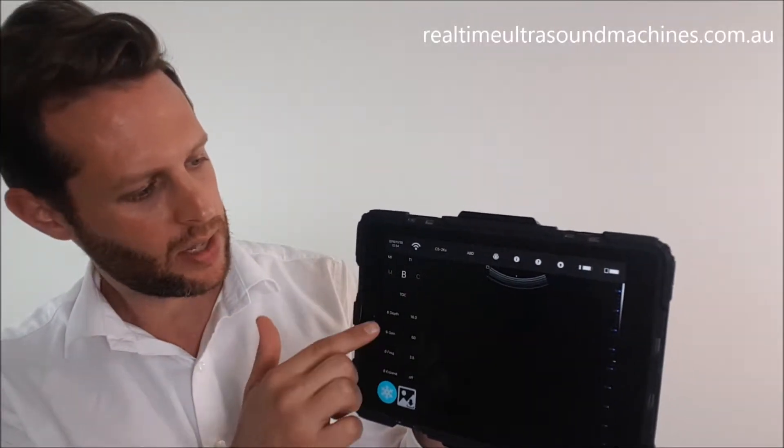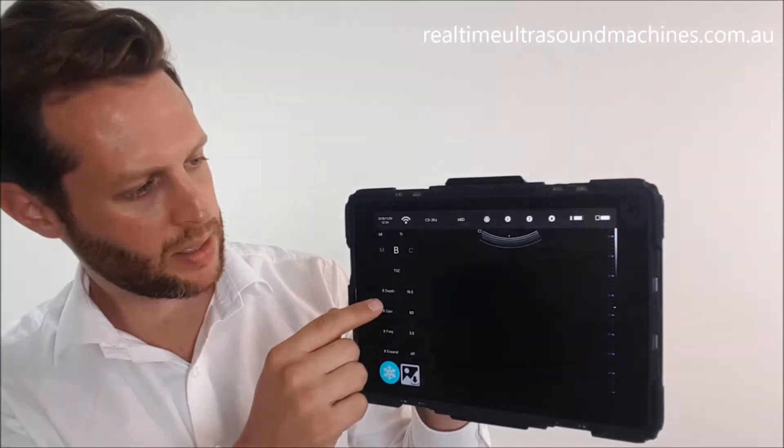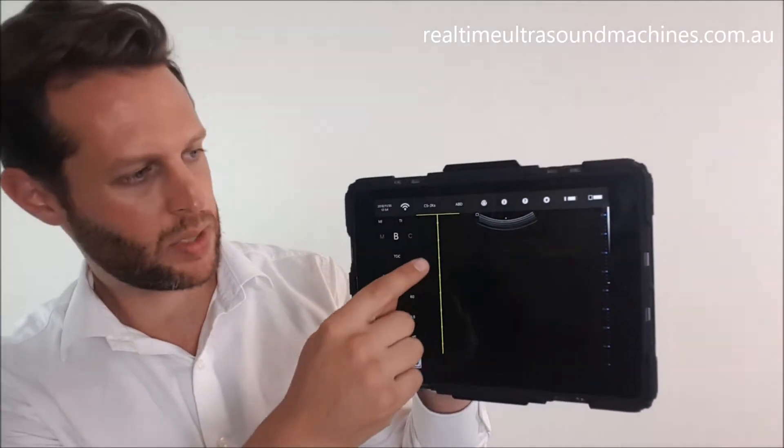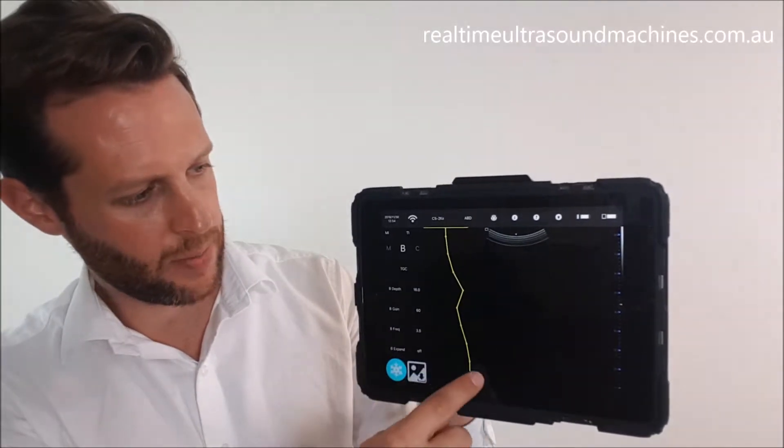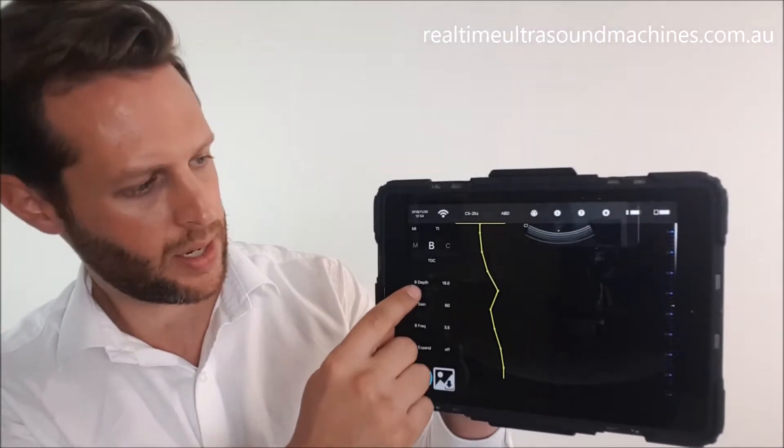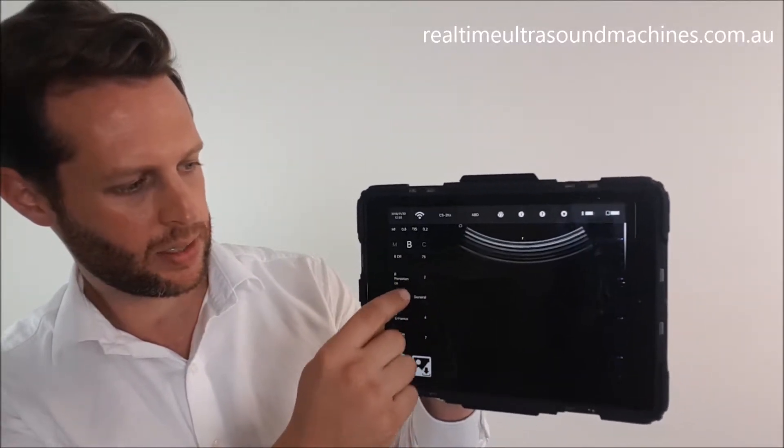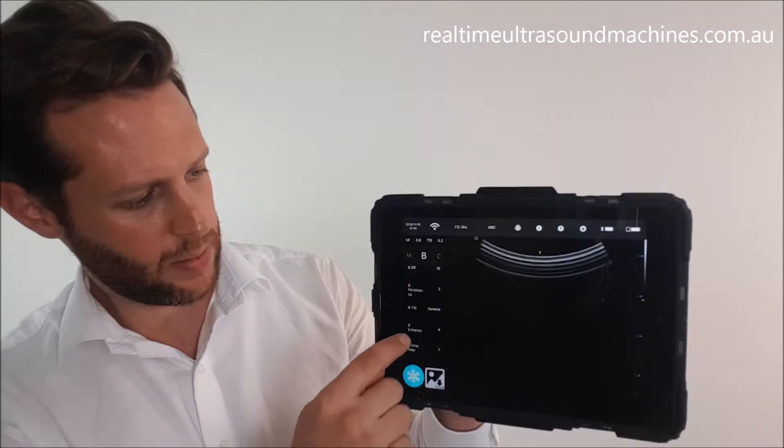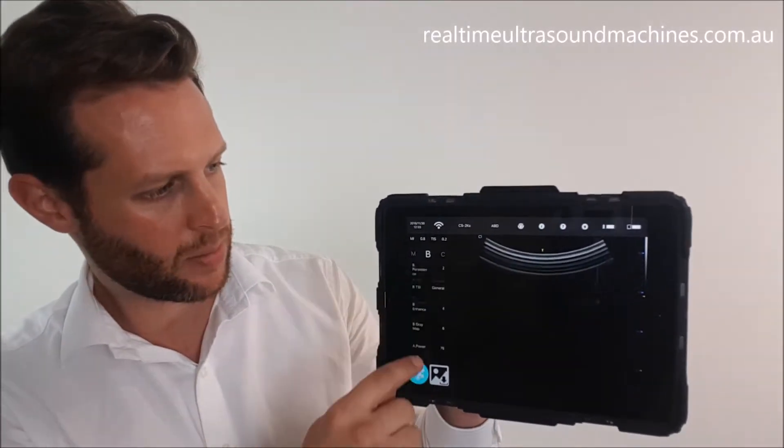On the left-hand side of the screen, you've got all your image optimization menus. You've got things like the TGC sliders, which you can adjust using your touchscreen, and the depth, which you can adjust by sliding your finger right or left. You've got other things like gain, frequency, expand mode, dynamic range, and so on - all these different image optimization parameters.